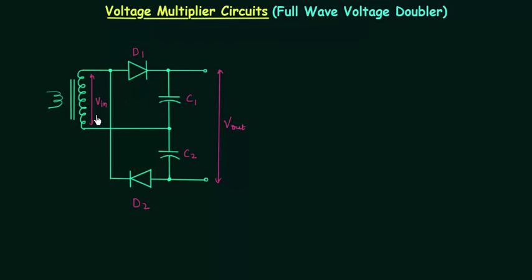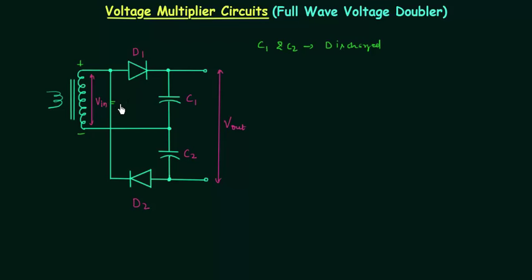I will first analyze it for the positive half cycle, then we will analyze it for the negative half cycle. One assumption we have to make is that capacitors C1 and C2 are discharged initially. In the case of the positive half cycle, this is the polarity of the input voltage and Vin is equal to Vm.